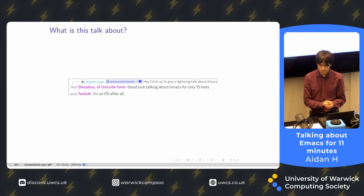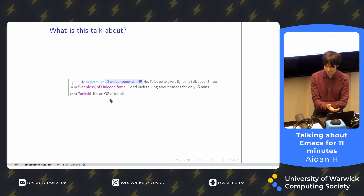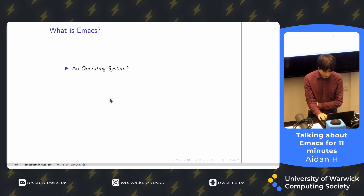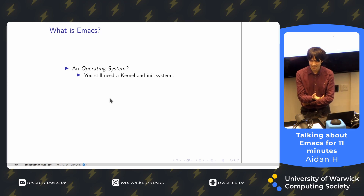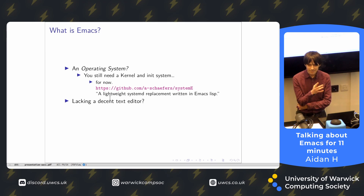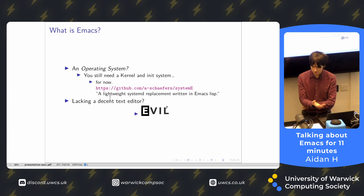This talk is about clearing up some misconceptions about what Emacs actually is. When I said I wanted to do a talk about Emacs, I got the familiar response: it's an operating system. The other thing people say is it's an operating system lacking only a decent text editor — but both of those things are wrong. It's not an operating system because you still need a kernel and an init system to use it. And does it lack a decent text editor? Well, there's an implementation of Vim, which is the best text editor ever. So obviously it's not that either.